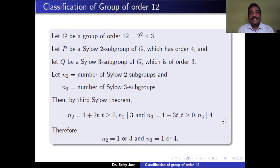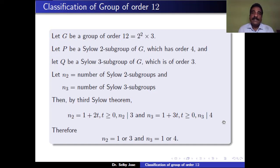Let G be a group of order 12, where 12 = 2² × 3. Therefore, G has a Sylow 2-subgroup of order 4 and a Sylow 3-subgroup of order 3. Let T be a Sylow 2-subgroup and Q be a Sylow 3-subgroup of G. Let N2 denote the number of Sylow 2-subgroups and N3 the number of Sylow 3-subgroups of G.